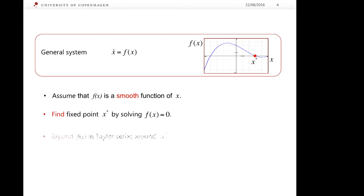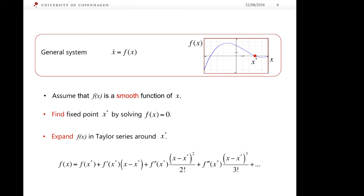At the next step, we expand our function f in a Taylor series around the fixed point x star. The Taylor expansion contains a linear term, which is (x minus x star), and some higher-order terms: (x minus x star) squared, (x minus x star) cubed, and so on.